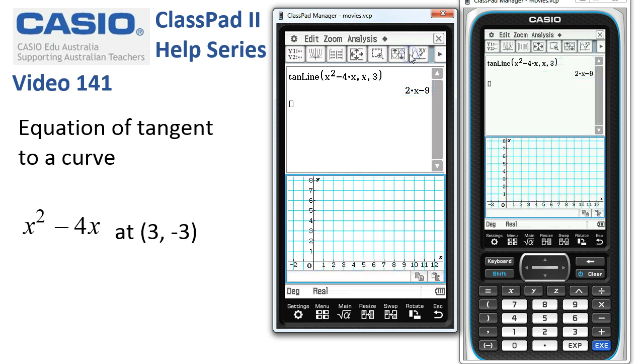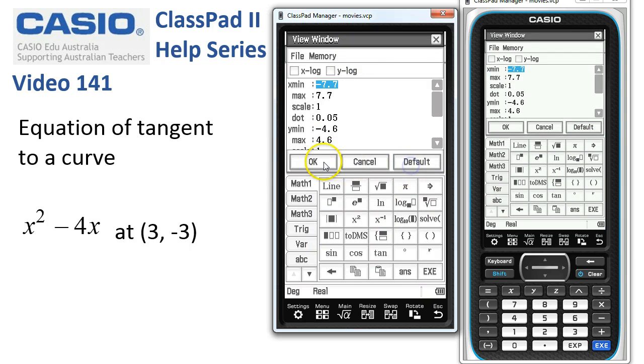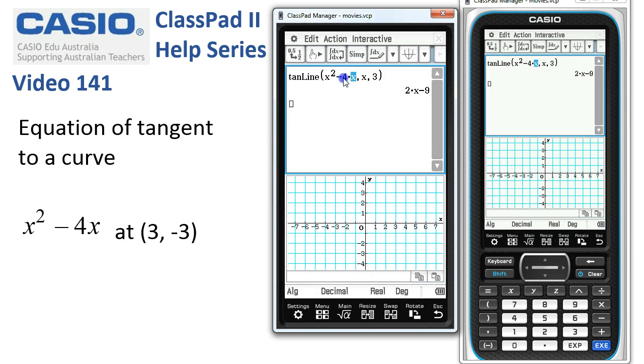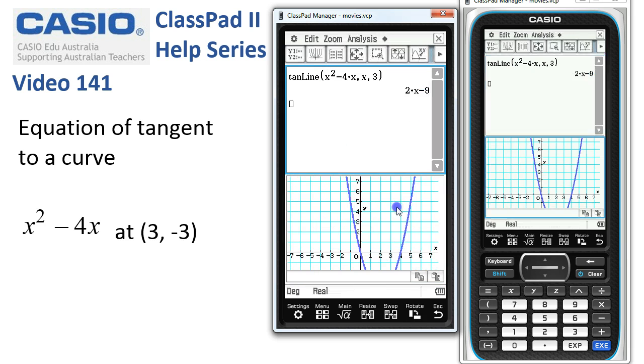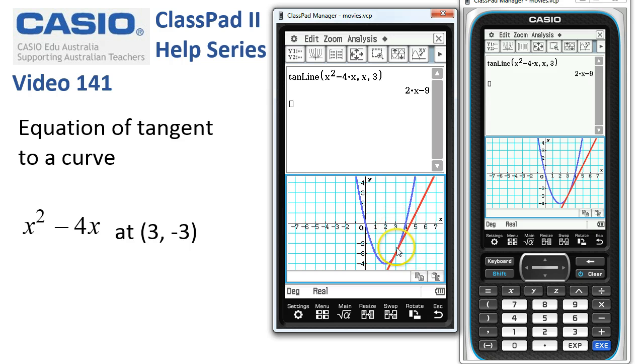Let's just check that out. We'll get ourselves a bit of graph paper, rescale it to the default scale, take the original function, drag it into that window, take the tangent, drag it into the window, and there it is. When x equals 3, there's the equation of the tangent.